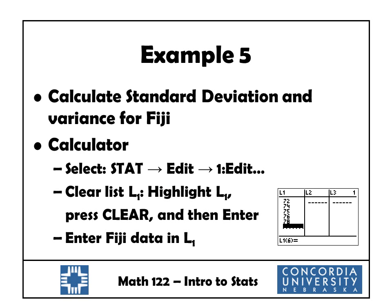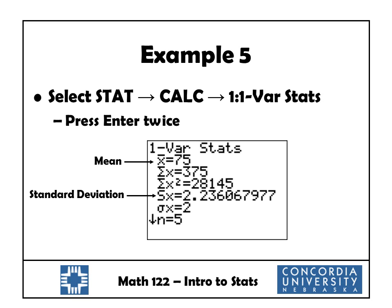Calculating standard deviations by hand is cumbersome, so let's use the calculator for Fiji. Go to the STAT Edit menu to enter data. We probably still have the previous data in L1, so clear it first: scroll up until L1 is highlighted, press Clear, then press Enter — that clears the entire list. Now enter the Fiji data in L1: 72, 74, 75, 76, and 78, pressing Enter after each.